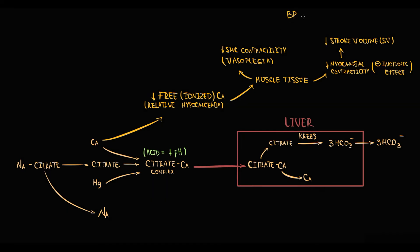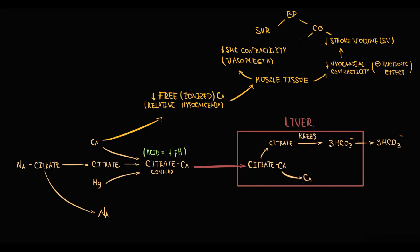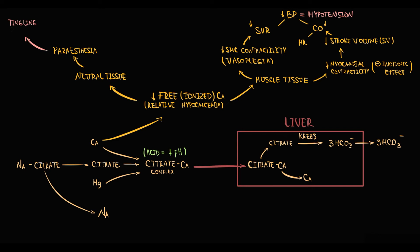Both decreased stroke volume and vasoplegia lead to decreased blood pressure. Blood pressure equals cardiac output multiplied by systemic vascular resistance, and cardiac output equals stroke volume multiplied by heart rate. With decreased stroke volume, cardiac output decreases; and because vascular contractility decreases, systemic vascular resistance also decreases. These two effects combined cause hypotension. Low calcium also affects neural tissue, resulting in paresthesia — tingling sensations in different parts of the body — carpopedal spasm, tetany, and seizures.